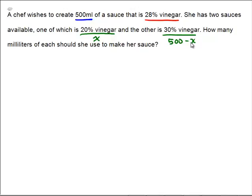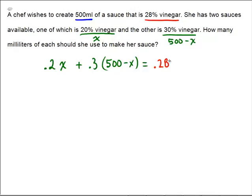We have x milliliters at 20% vinegar. Then we also have vinegar coming from the other source: 500 minus x milliliters, of which 30% is vinegar. And by the end, we're going to get a solution that is 28% vinegar, totaling 500 milliliters. In each case, a percentage times an amount gives the amount of vinegar.